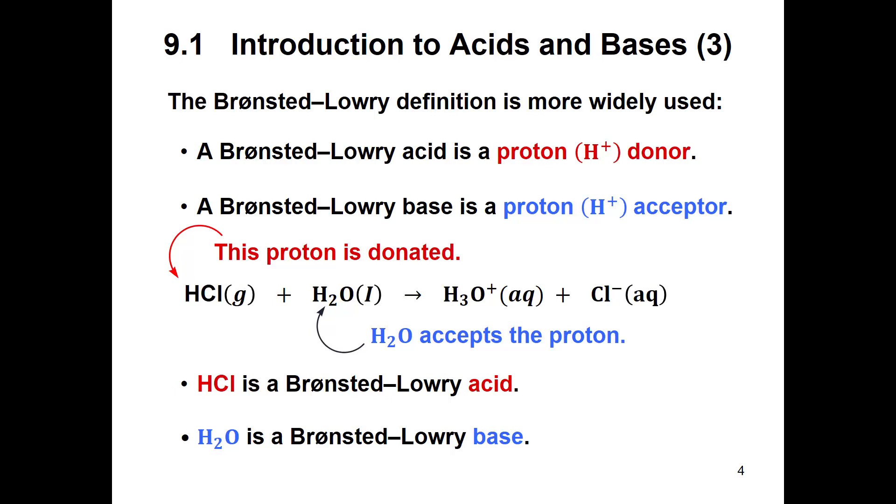Another definition came into play called the Bronsted-Lowry definition, and that's the one that's more widely used today. The Bronsted-Lowry is very similar for an acid: it donates a proton or a hydrogen ion. If you recall, a hydrogen ion has one proton and one electron but no neutrons, so if you remove your electron then you're left with only a proton. That's why hydrogen ions and protons are synonymous.